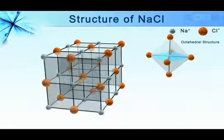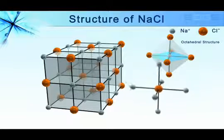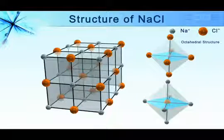If we extend the cubic structure, we can also see that each Cl ion is octahedrally surrounded by 6 sodium ions.